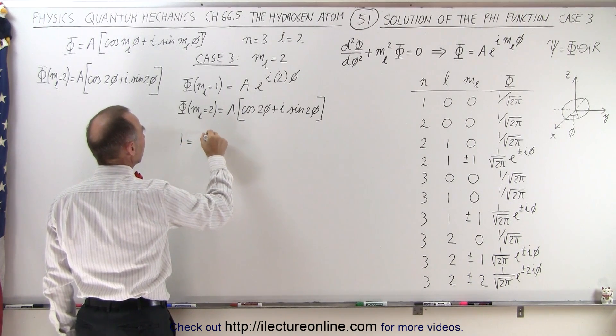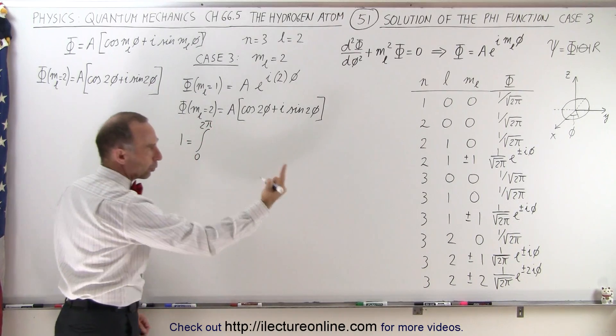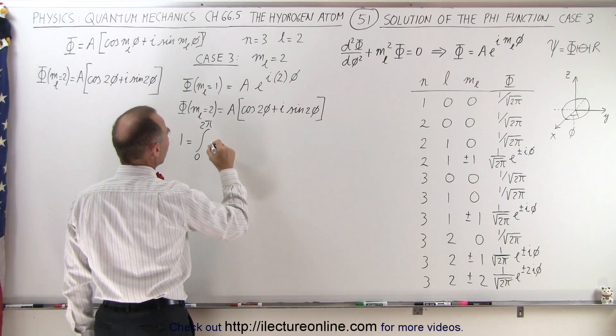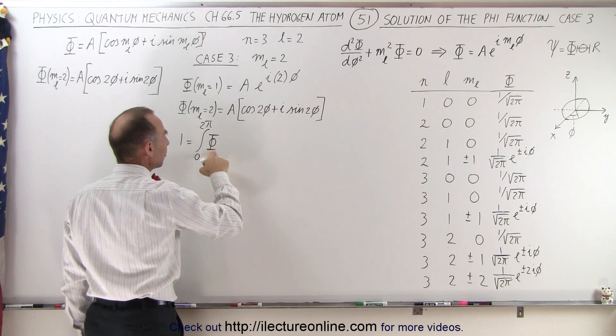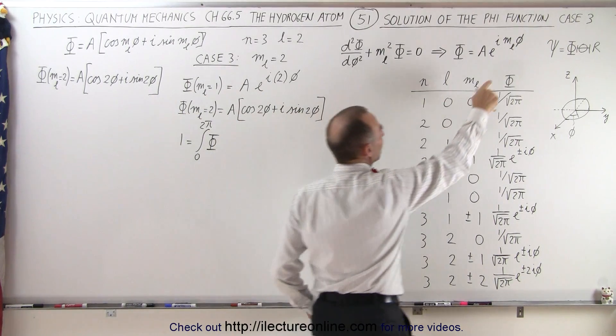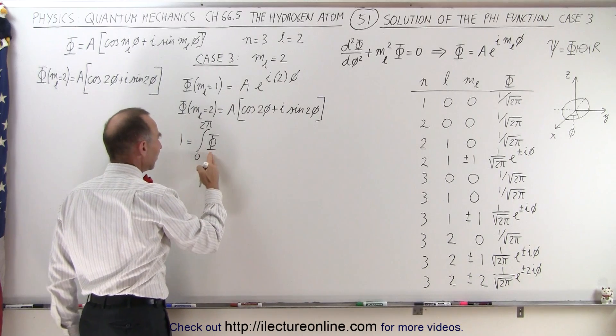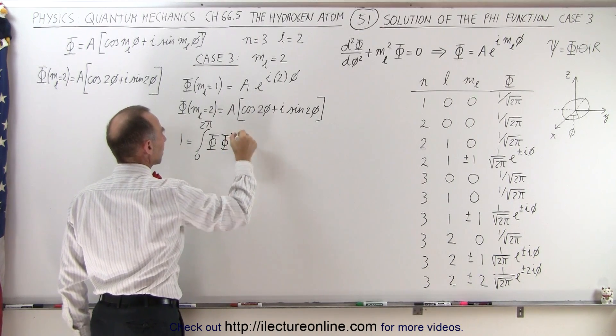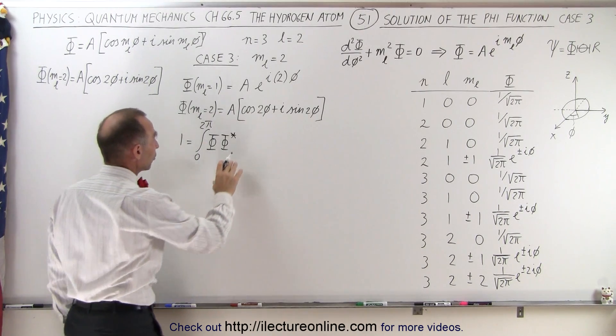We have 1 is equal to the integral from 0 to 2π, because we're going to integrate all the way around in the azimuthal direction, of the function squared. But again, since we have this imaginary number i in here inside the function, we have to multiply the function by its complex conjugate, so that way we get rid of the i in the solution.